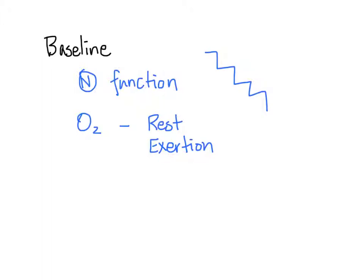For baseline history, we need to know what their function is normally. Are they able to go for a walk around the block? Can they do stairs? Are they dependent on oxygen? Is it only on exertion, at rest, and how much oxygen flow? What puffers do they use? We need to know the name and frequency of use, and whether there are any changes in the past.